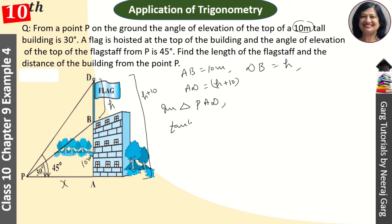So tan 45 is equal to 45. So this will be AD upon PA and the value of tan 45 is equal to 1. So 1 is equal to AD which is H plus 10, and PA is equal to X. So X is equal to H plus 10. This is our result, we will take this result later.